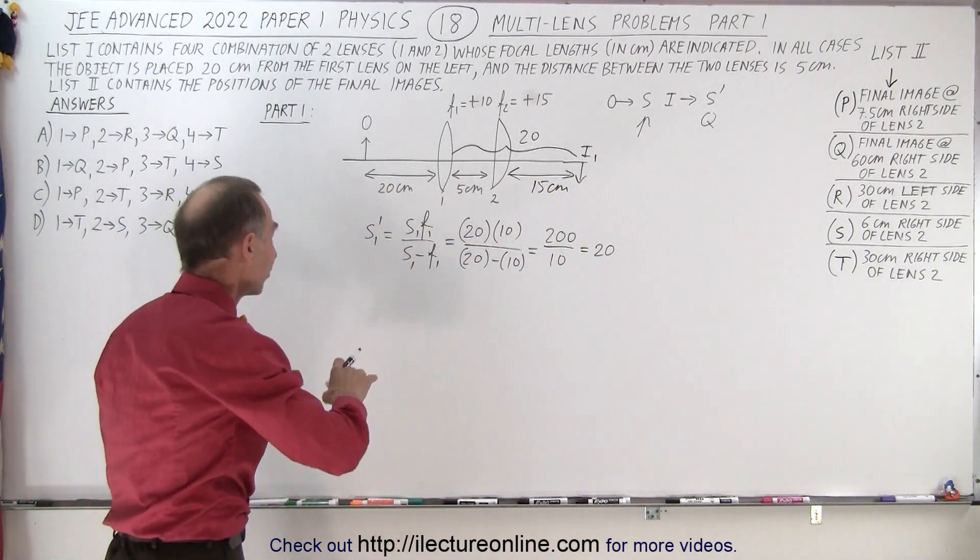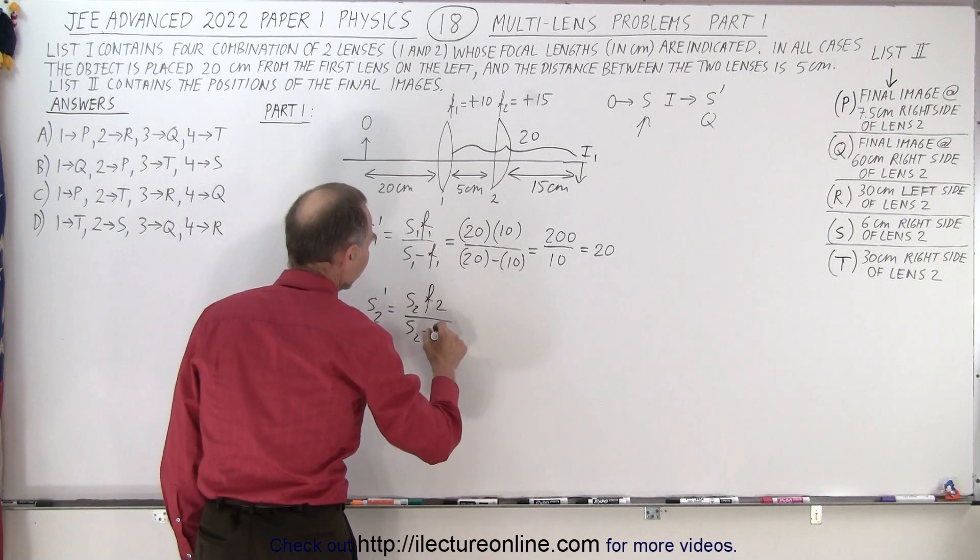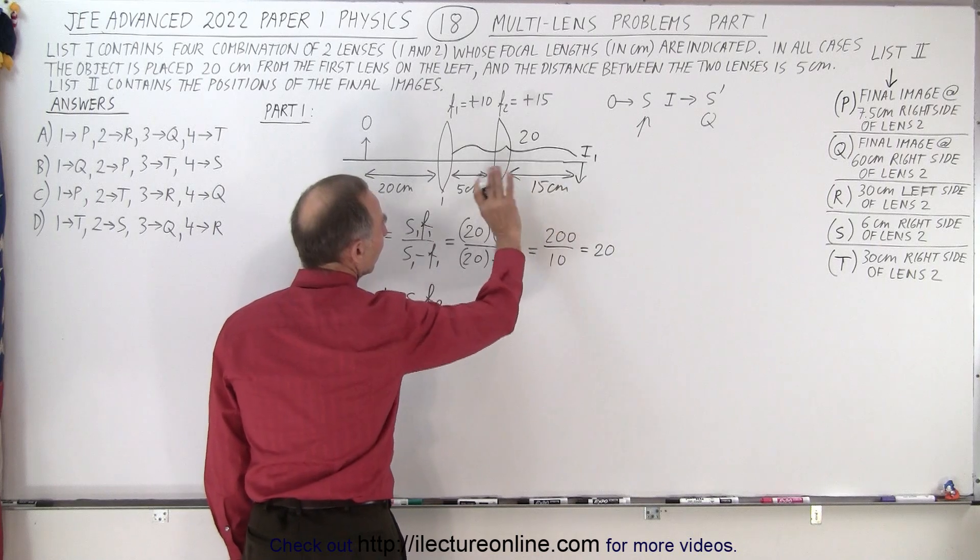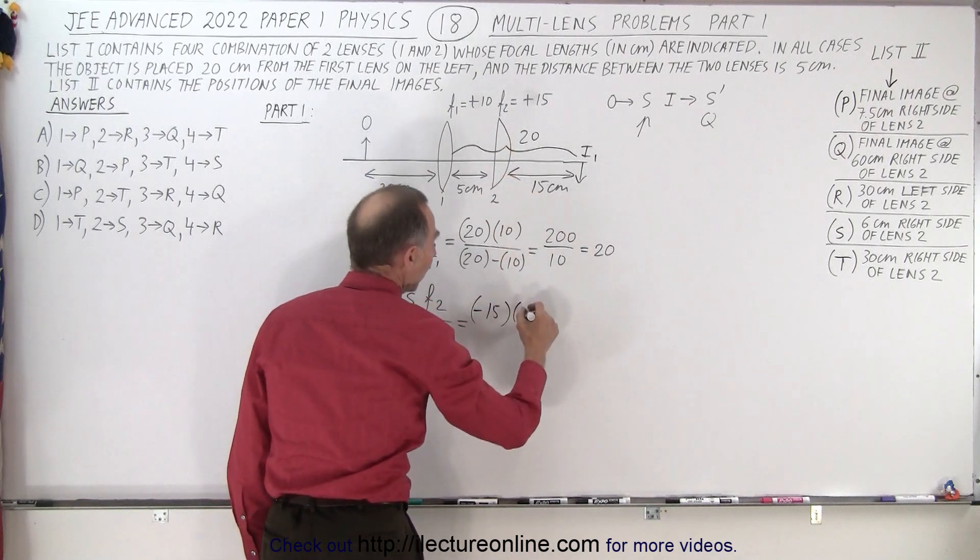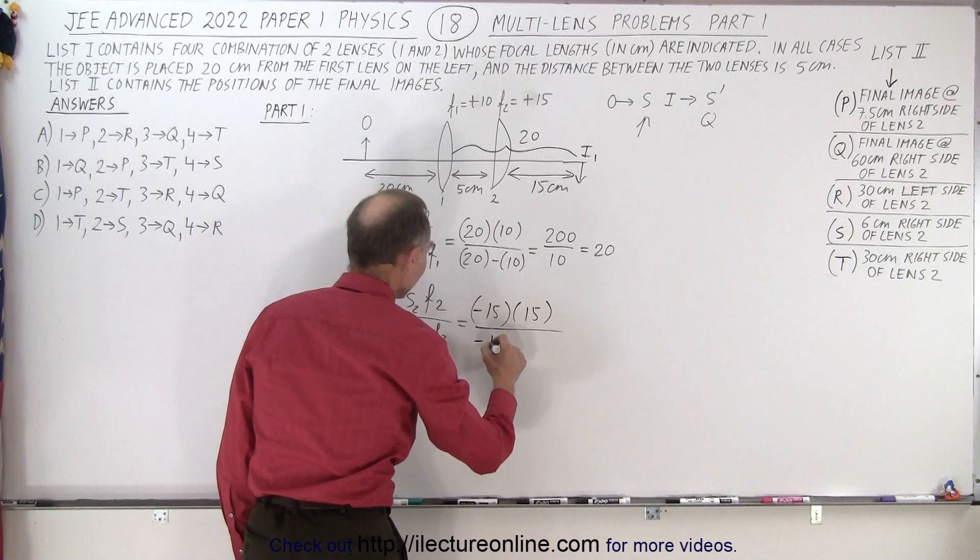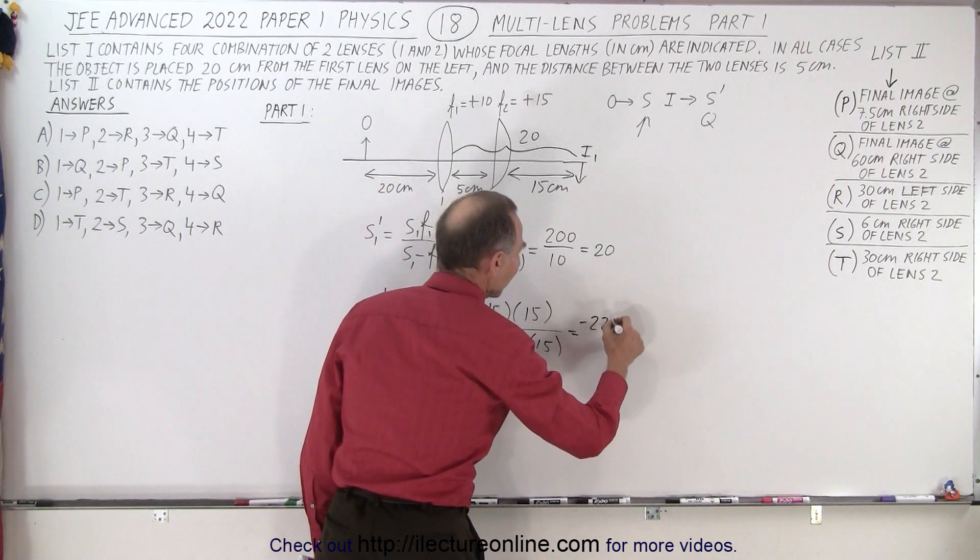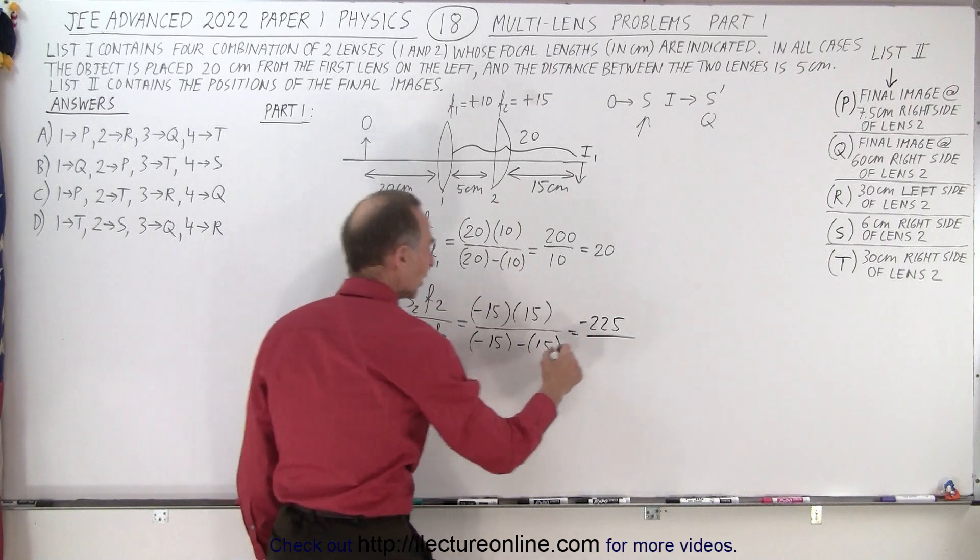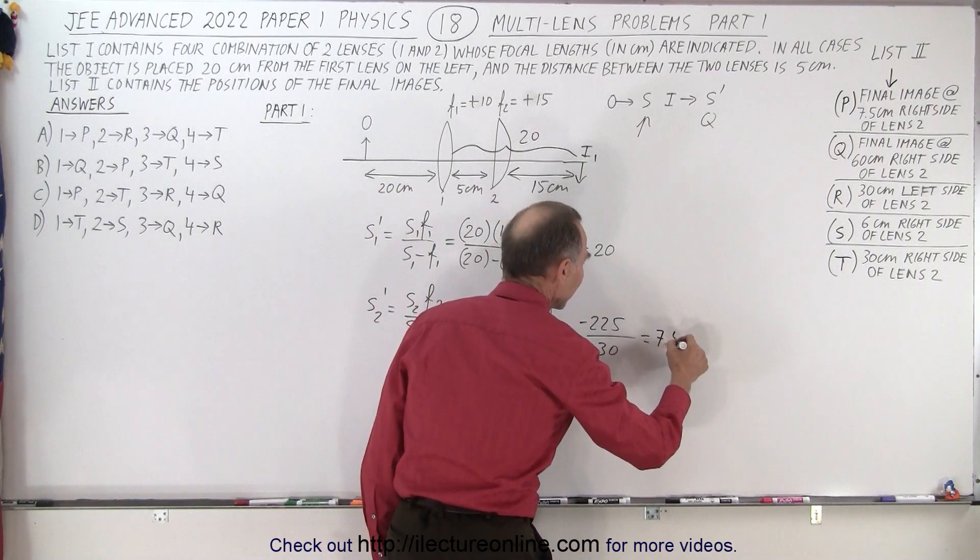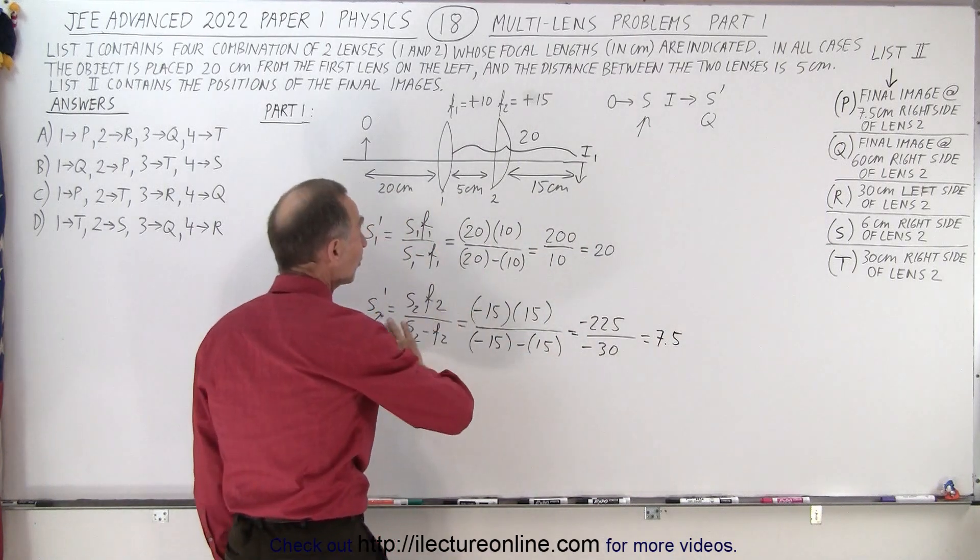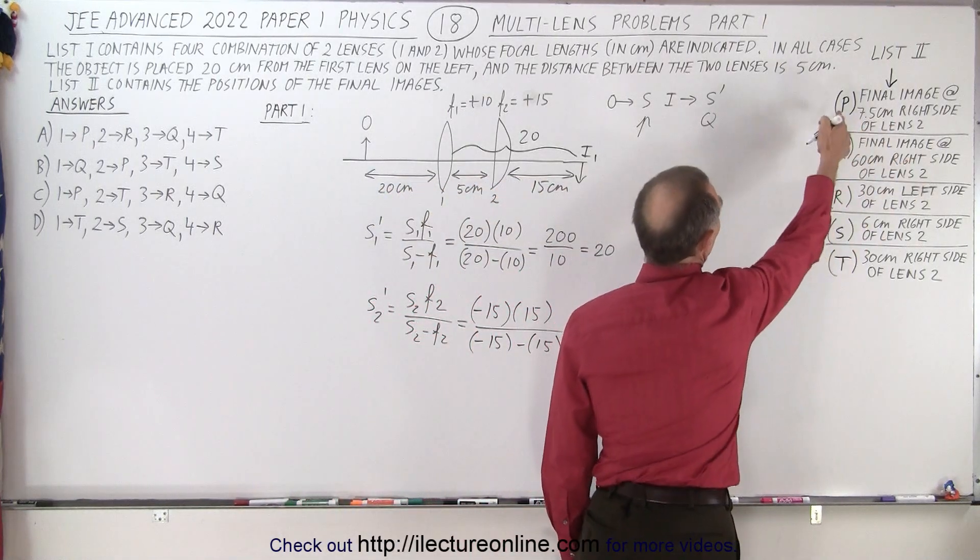So now we're ready to solve for the second image. So now we can say S2 prime is equal to S2 F2 divided by S2 minus F2. And so S2 now is this distance right here, but because it's to the right of the lens that becomes a negative object distance. So negative 15 times a positive 15 for the focal length divided by negative 15 minus a positive 15. So this becomes minus 225 divided by minus 15 minus 15, that's minus 30. And so that cancels out, the negatives cancel out. So that looks like it's 7.5. So 7.5 and it's positive, which means it's to the right of the second lens. So which is the possible answers here? 7.5 centimeters to the right. So it would be answer P.